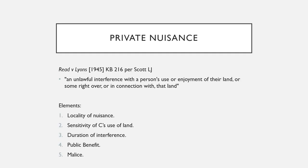In private nuisance you need two things. These were established in Reading Lines. You basically need an interference and you need a reasonable user test — so it's basically saying the reasonable person would be affected by this interference in their land; they are not able to use it, not able to enjoy it, not able to utilise the right of theirs.